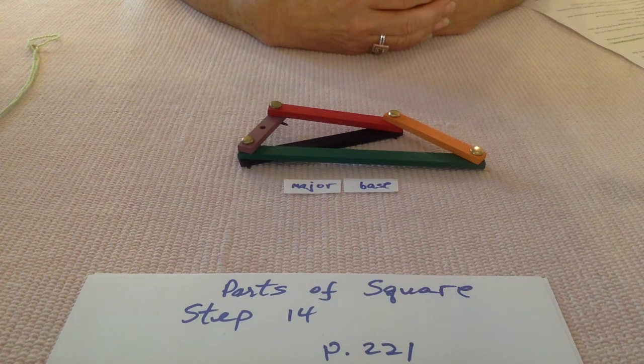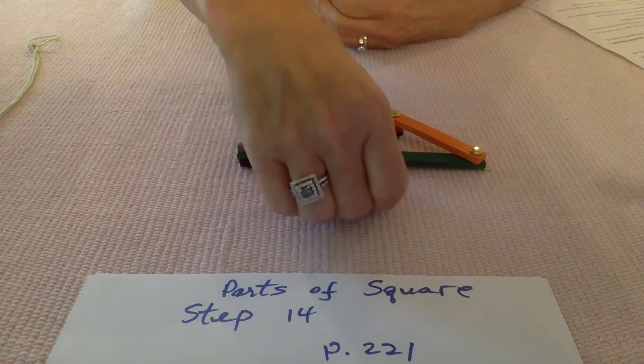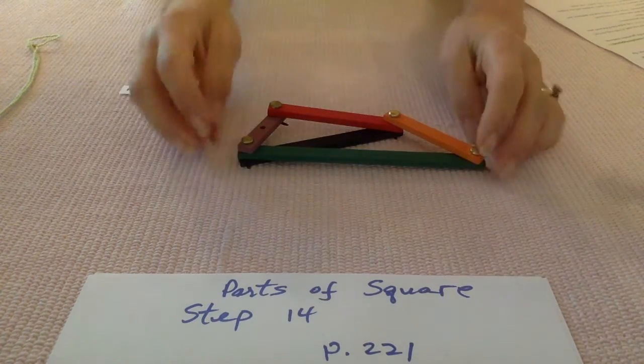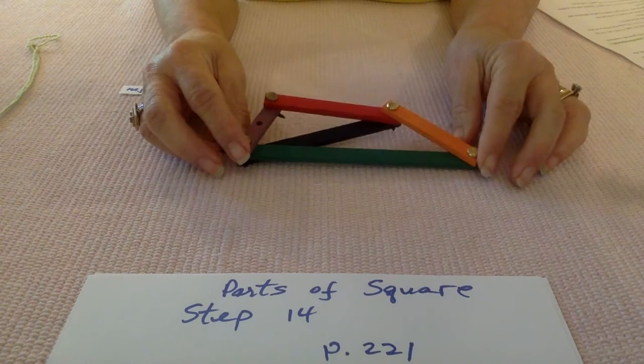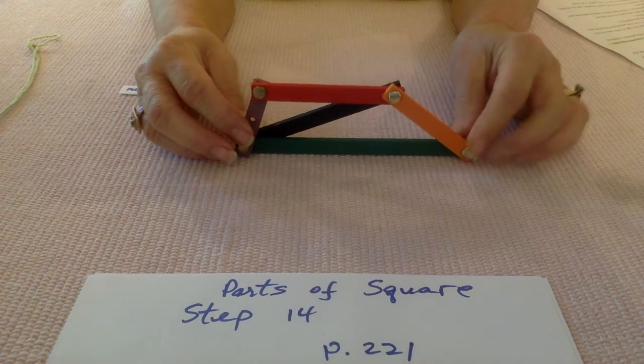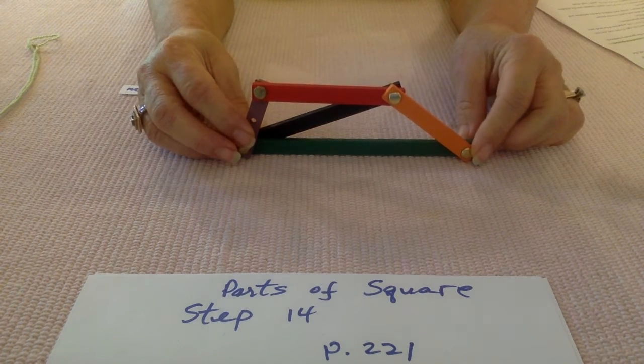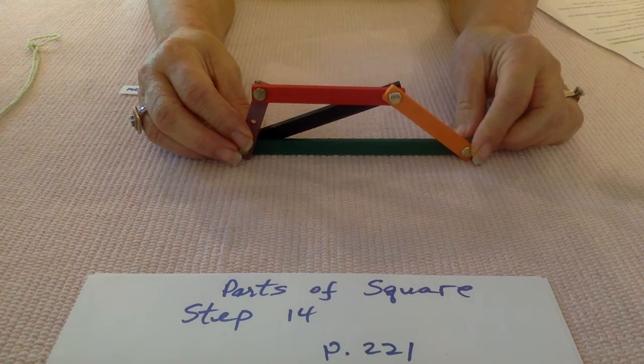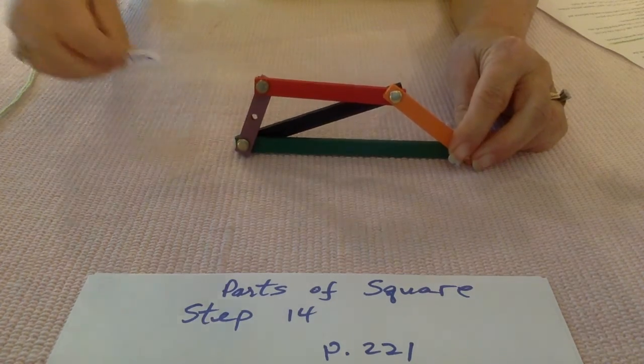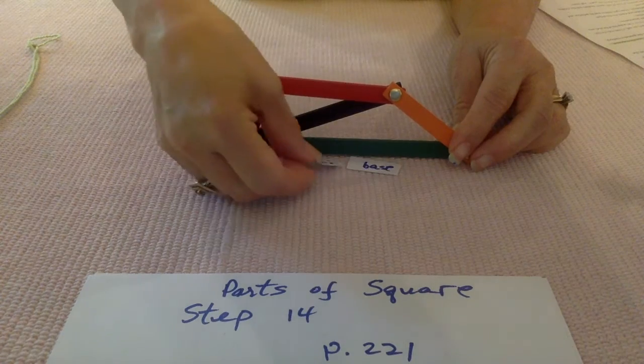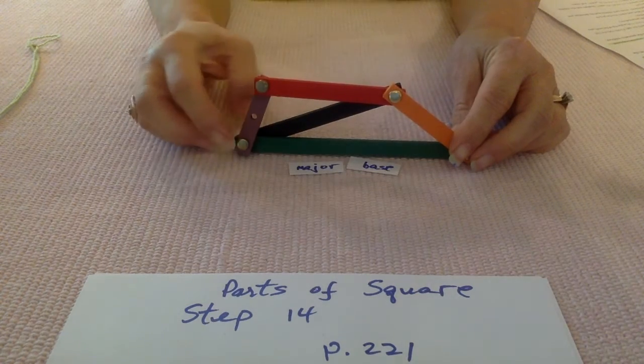So let's take a look at our trapezoid. When we have a trapezoid and it rests on the longer side, like I'm resting it now, this is called the major base.